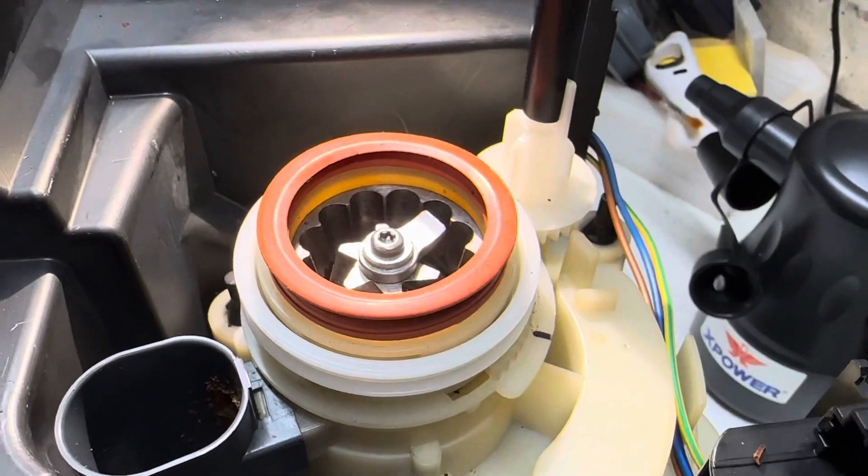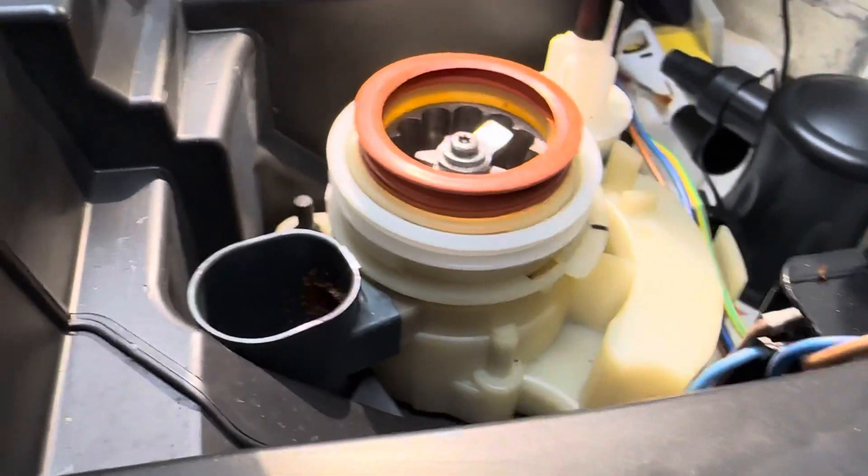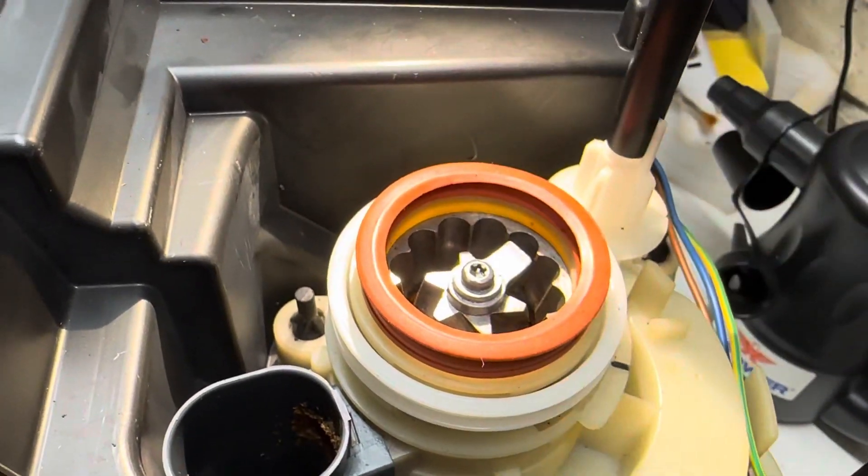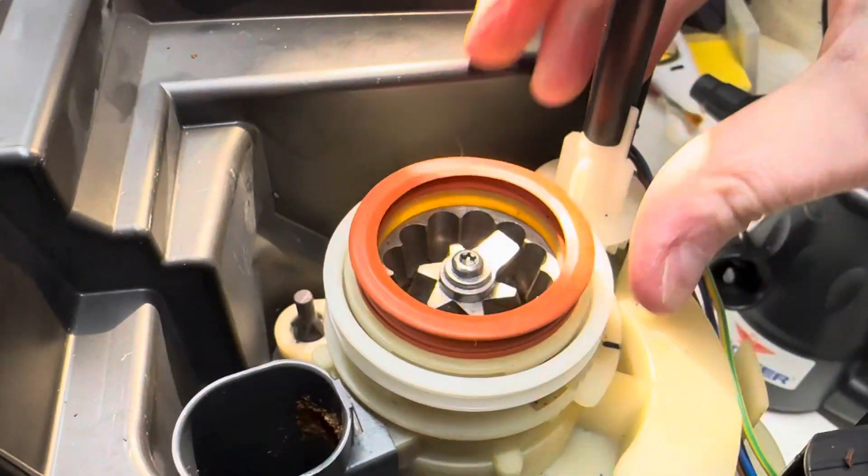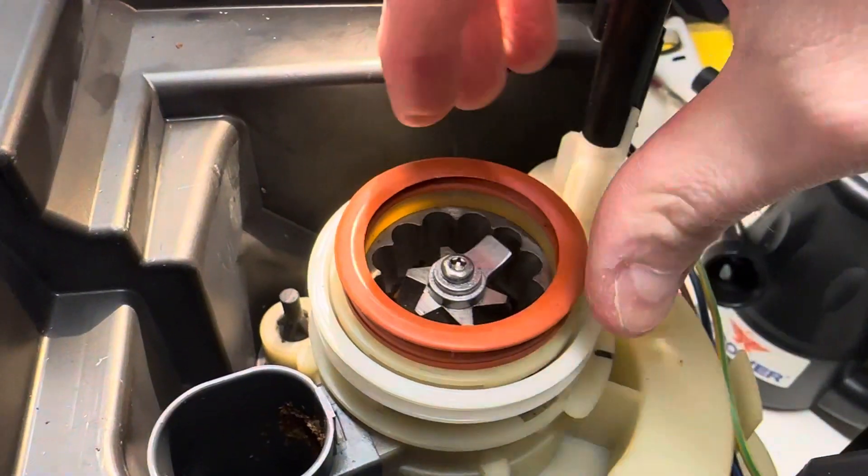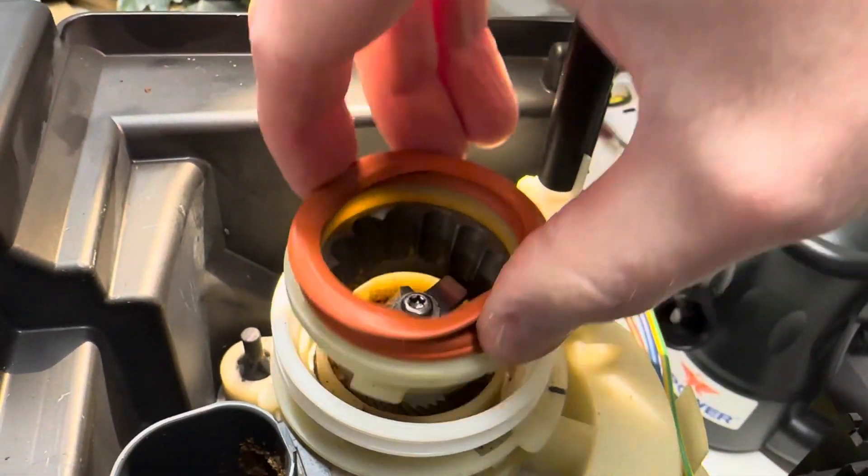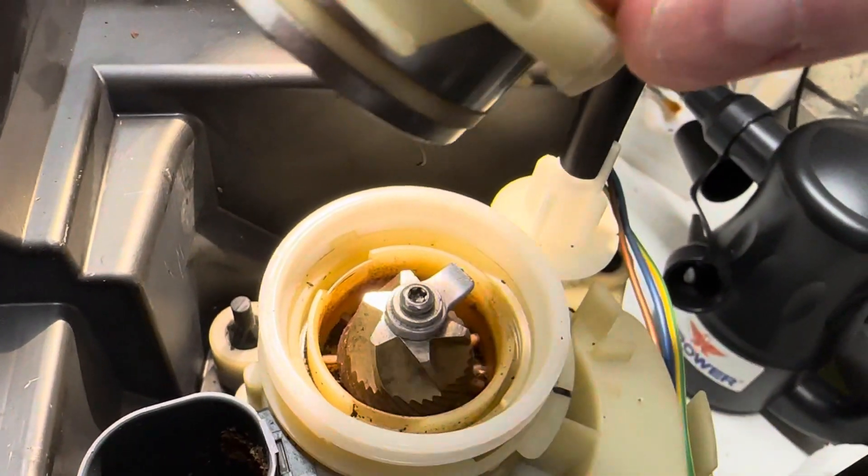So I took it apart again because I assumed I must have put it together incorrectly, and I had. I figured out that the problem is this seat for the top part of the grinder - it's supposed to be locked in place. Right now it's together, but I can actually just lift this out. This is where I went wrong.